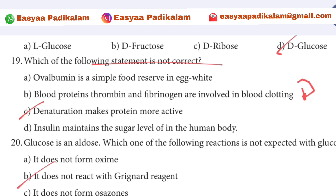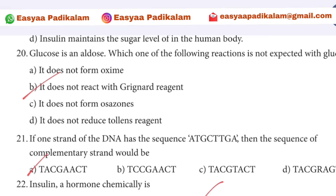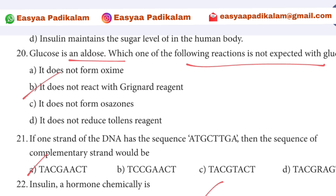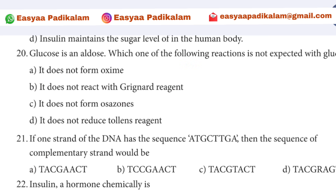20th question: Glucose is an aldose. Which one of the following reactions is not expected? If you apply Grignard reagent to glucose — glucose is an aldose, so apply Grignard reagent.